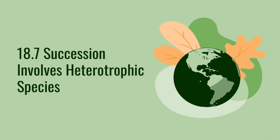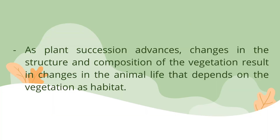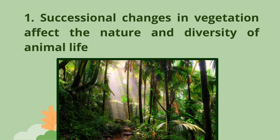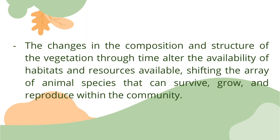Section 18.7: Succession involves heterotrophic species. As plant succession advances, changes in the structure and composition of the vegetation result in changes in the animal life that depends on the vegetation as habitat. Animals influence succession in two ways. First, successional changes in vegetation affect the nature and diversity of animal life. The changes in composition and structure of vegetation through time alter the availability of habitats and resources, shifting the array of animal species that can survive, grow, and reproduce within the community.